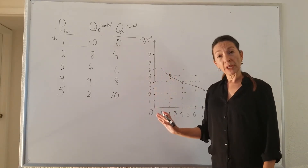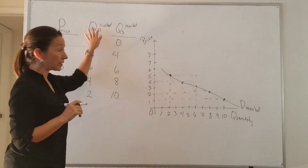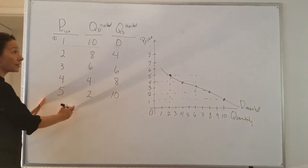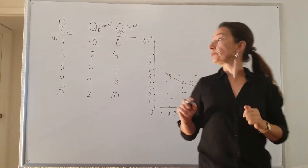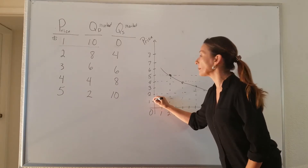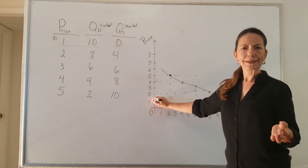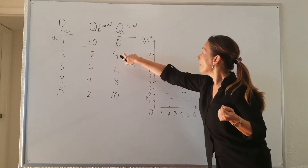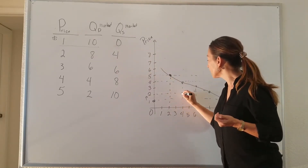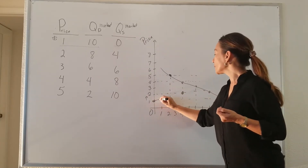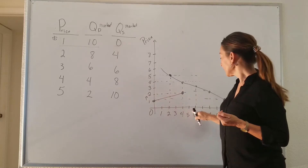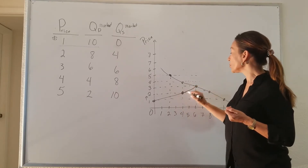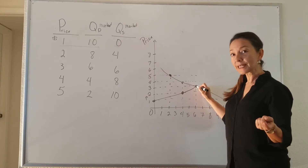Then I'm going to graph the supply curve. I'm going to ignore the demand curve for right now and just look at market supply, quantity supplied, and the different price points. At a price of $1, zero supply, because businesses don't want to sell for only $1. If the price goes up to $2, they supply four ice cream cones. At $3, they supply six ice cream cones. Note that quantity supplied equals quantity demanded at this point.